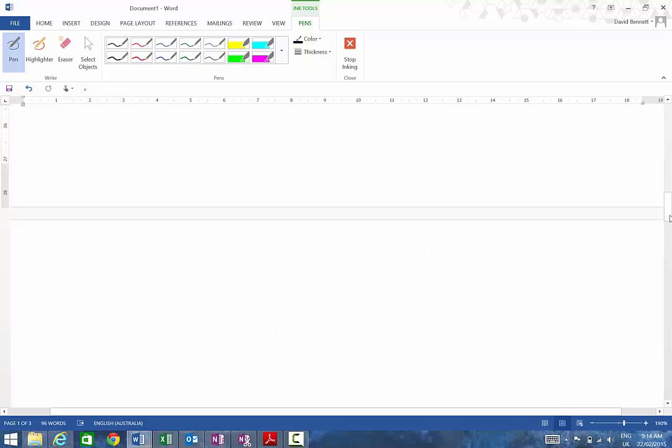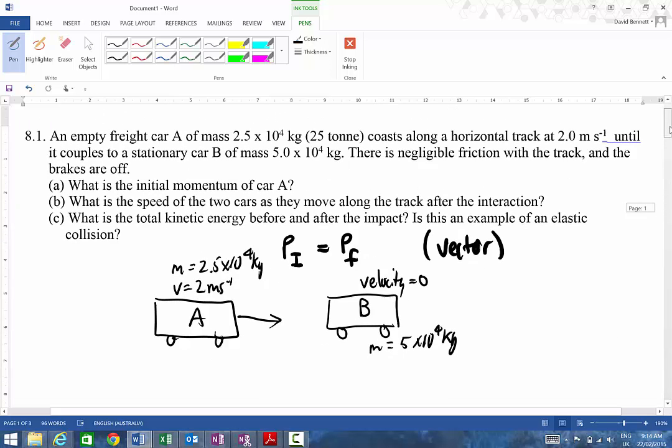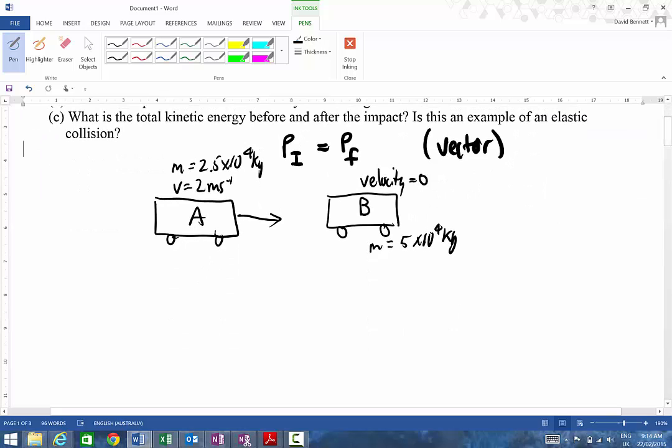The key thing with any of these calculations, same when we start looking at 2D, is to work out the initial momentum. The initial momentum is going to be momentum of A plus the momentum of B. And then what we're doing over here is we know that momentum is mass times by velocity.